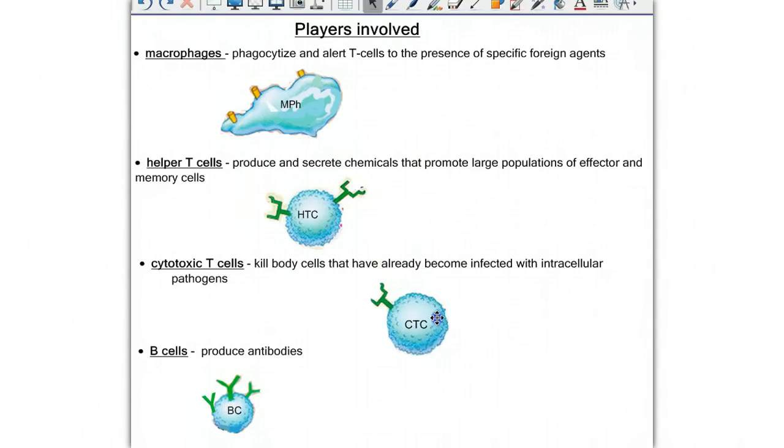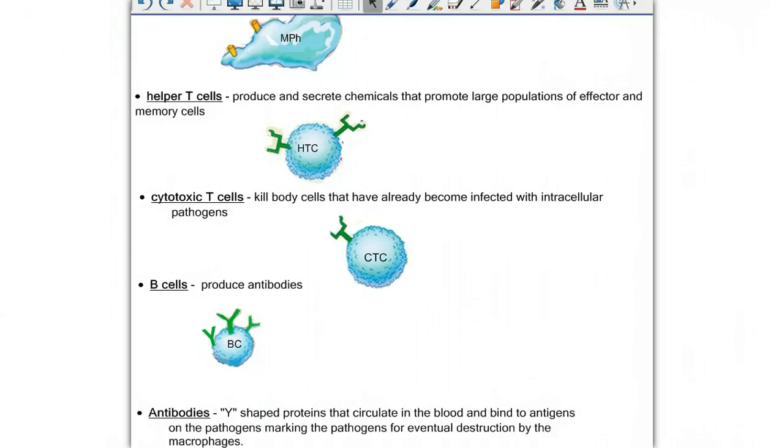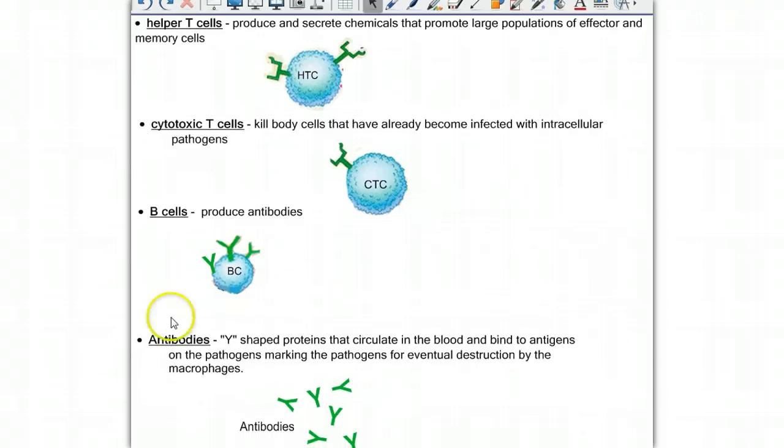And then we have the cytotoxic T-cells, or killer T-cells. These are the cells that are going to attack the body cells that have already become infected with intracellular pathogens. And we have B-cells. B-cells are lymphocytes that produce antibodies.